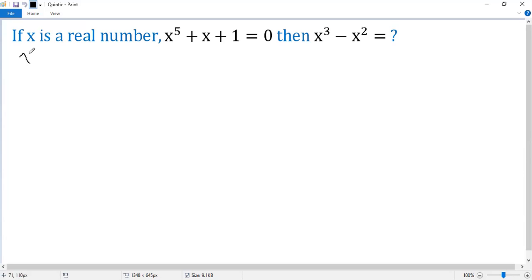The given condition can be written as x to the power of 5 plus 0 plus 0 plus 0 plus x plus 1 equals 0. Now we change the first 0 as x to the power of 4 minus x to the power of 4. The second, x cubed minus x cubed. The third one, x squared minus x squared and then plus x plus 1 equals 0.